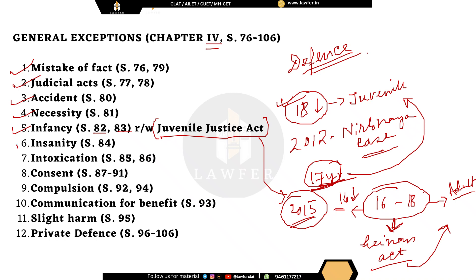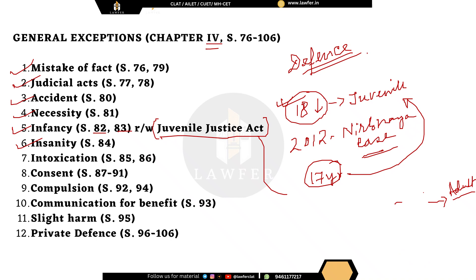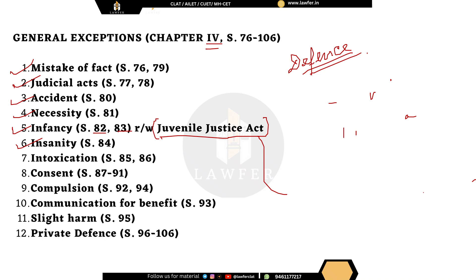Next is the defence of insanity under McNaughton's rule. If any person committed an act while under the effect of insanity or not in a fit mental state, they will not be guilty. McNaughton's rule says that the person should be insane while committing the offense. If while committing the offense the person was mentally fit, they cannot take up this defence of insanity.